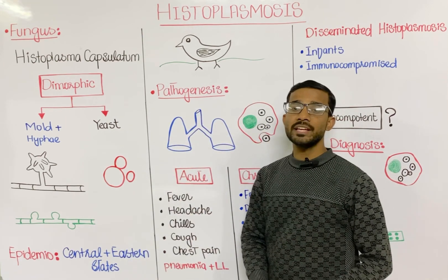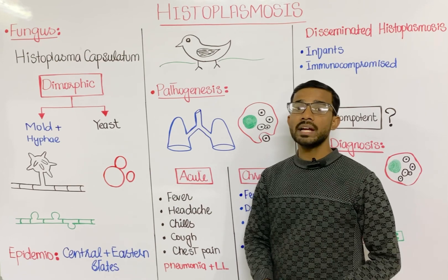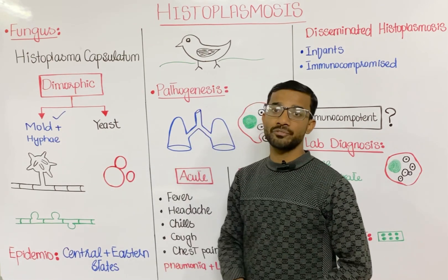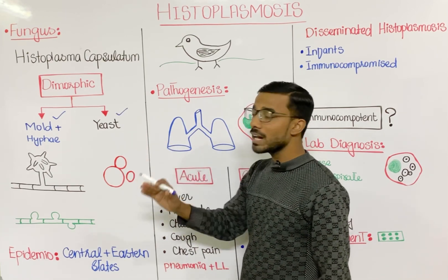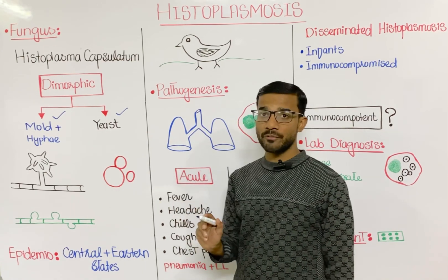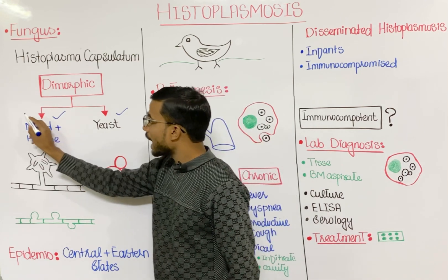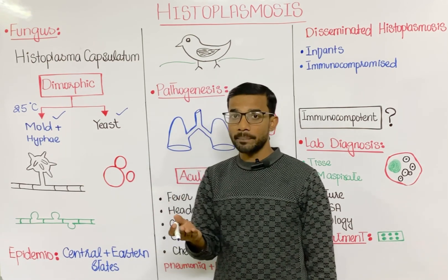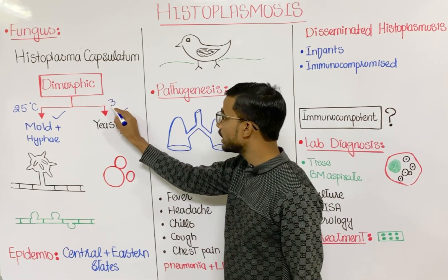The most important fungus is Histoplasma capsulatum. This fungus exists in two forms, which is why we call it a dimorphic fungus. It exists in the mold form, also called the hyphae form, and also in the yeast form. The key differentiation: mold grows below body temperature at 25°C (room temperature), and yeast grows at body temperature, which is 37°C.